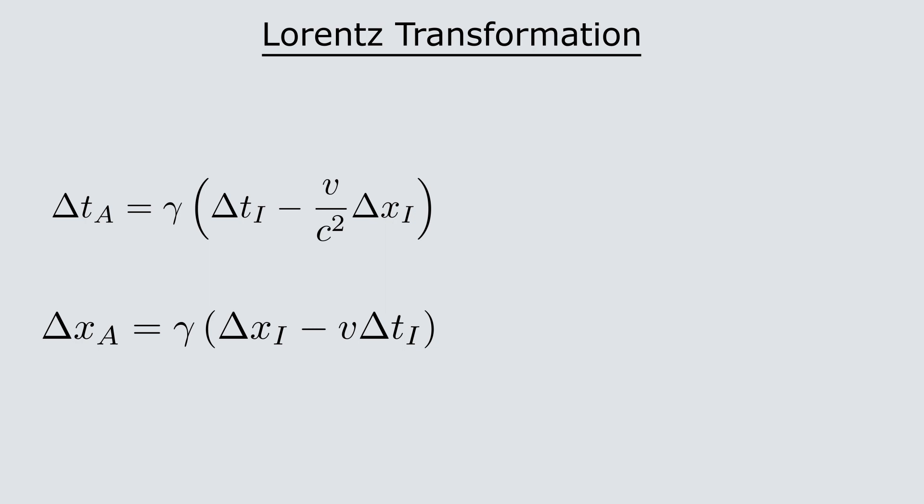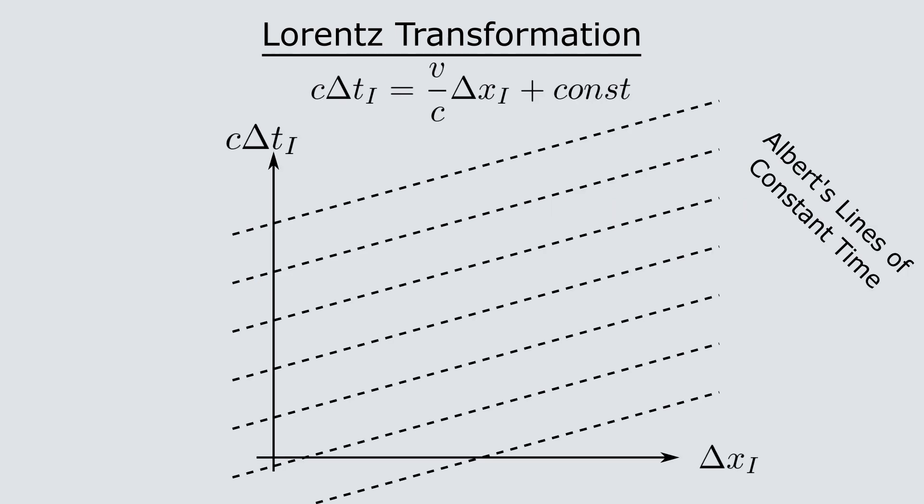So let's use this to draw a spacetime diagram for Albert in Isaac's coordinates. Let's call Albert's spatial coordinate delta xa and his time coordinate delta ta. Now, if we want to find lines of constant time in Albert's frame, we simply plug delta ta equal to a constant into the Lorentz transformation and solve for c delta ti. What we find is that lines of constant time in Albert's frame are actually slanted with a slope of v divided by c in Isaac's coordinates.